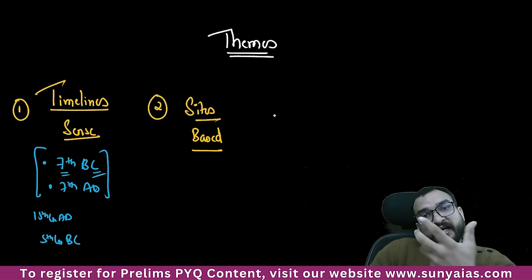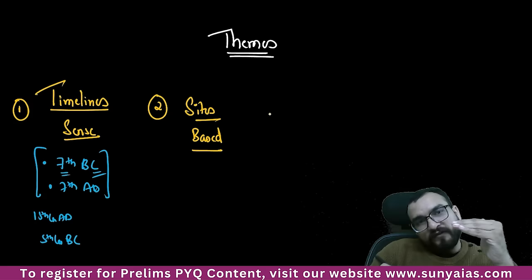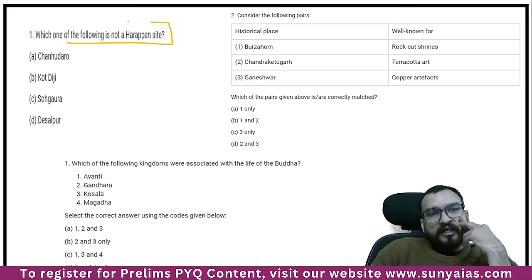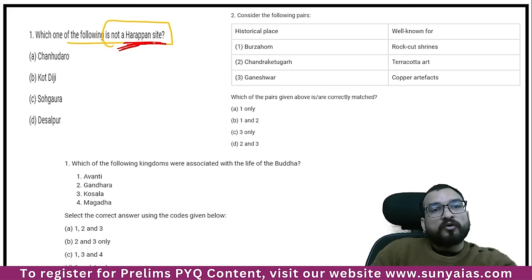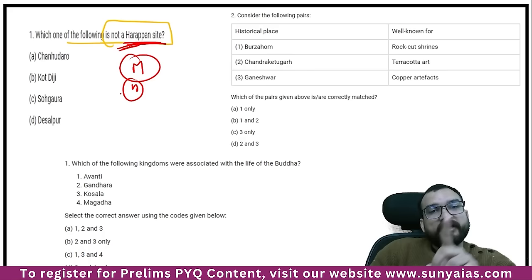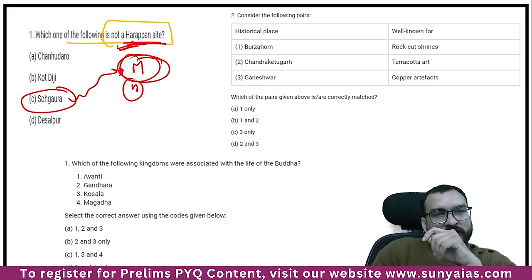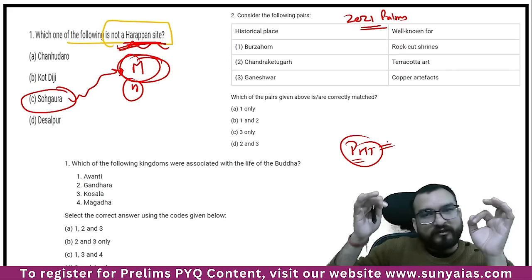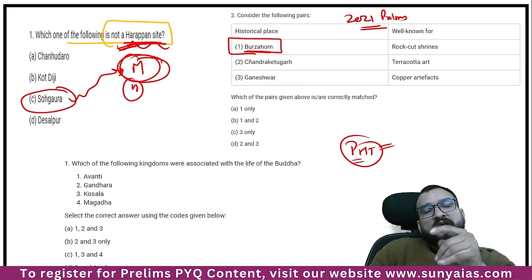As you move ahead, you should know every site — if I ask you where Banaskheda is, which dynasty Bhattarika is related to. Let me show you some site-based questions. Which one of the following is not a Harappan site? That means you should have knowledge of Harappan sites, as well as Mauryan sites and Harsha's sites — only then can you differentiate. When you see Sohgaura, you will say you have read this site in Mauryan times — this is not a Harappan site.